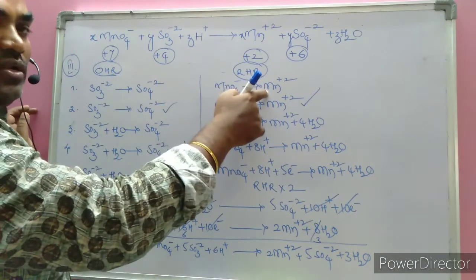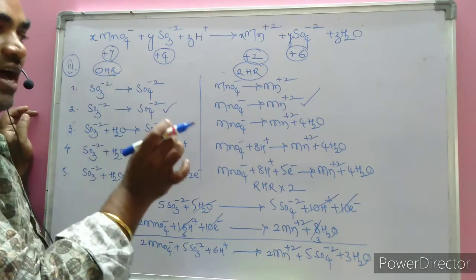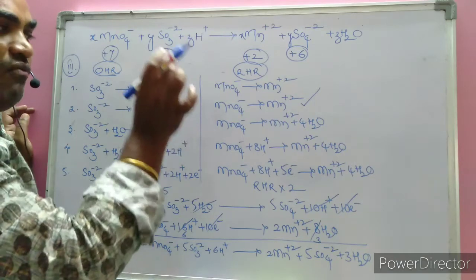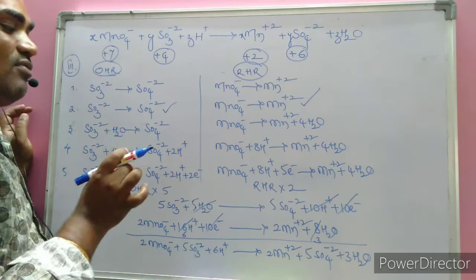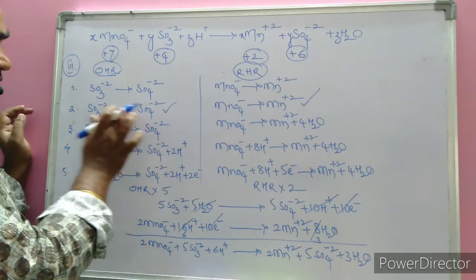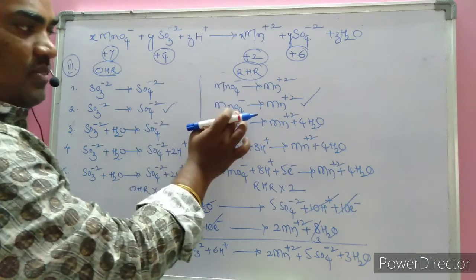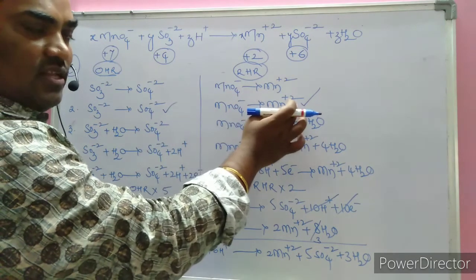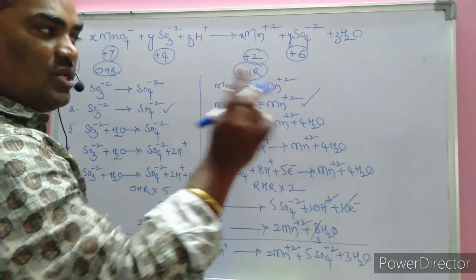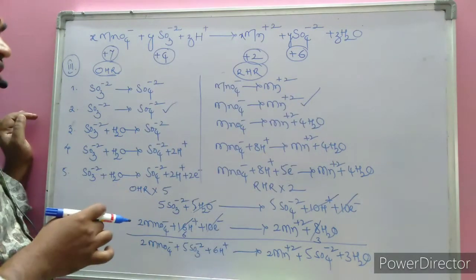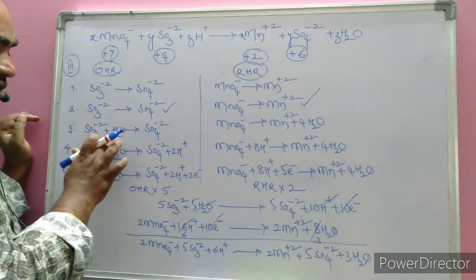Step 2: balance atoms other than oxygen and hydrogen. Here only sulfur and manganese are present, so no balancing is needed. Step 3: balance oxygen atoms — where there is a deficiency, add water molecules to that side. The left side has 4 oxygens and the right side has 3, so add one water molecule on the left. For the reduction half, 4 water molecules are placed on the right side since there is no oxygen on the right.